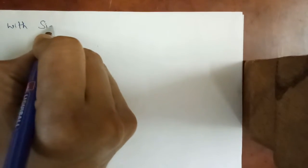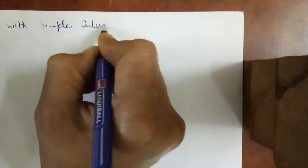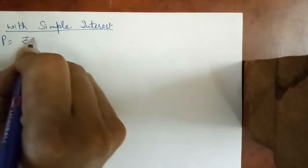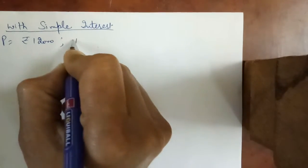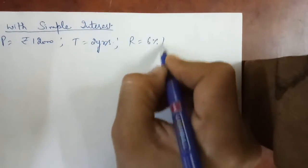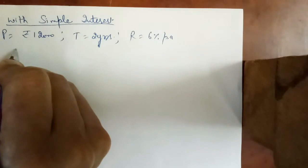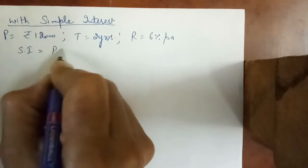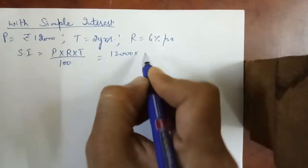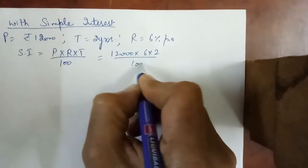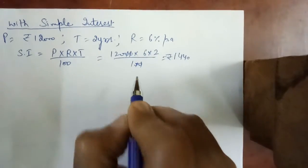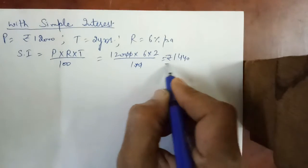First, we will solve with simple interest. Principal is ₹12,000, time is 2 years, rate is 6% per annum. Using the formula SI = P × R × T ÷ 100, that is 12,000 × 6 × 2 ÷ 100 = ₹1440. This is the simple interest.